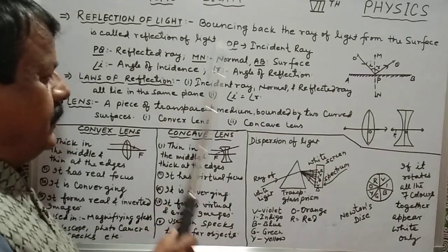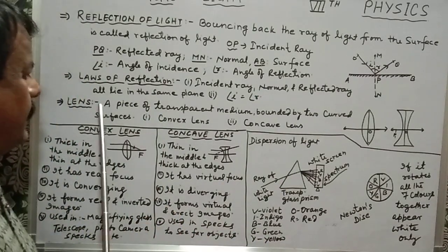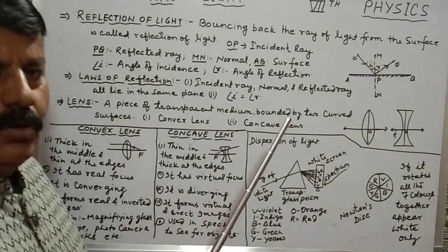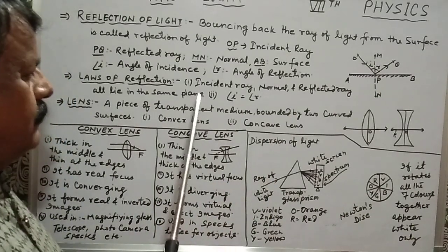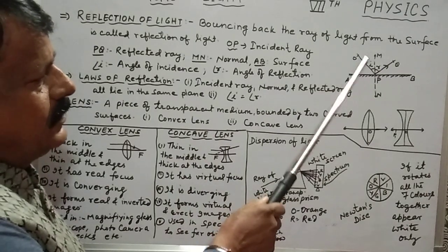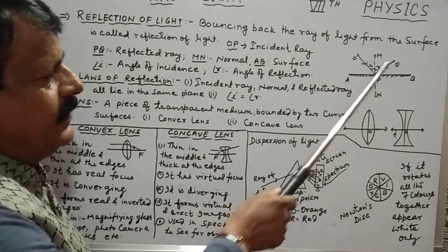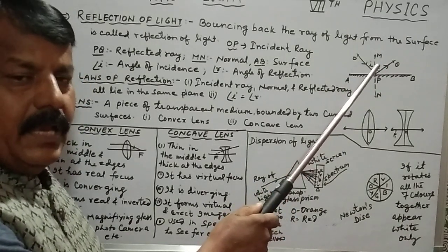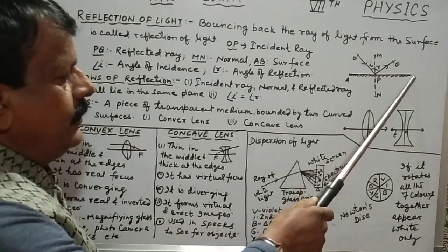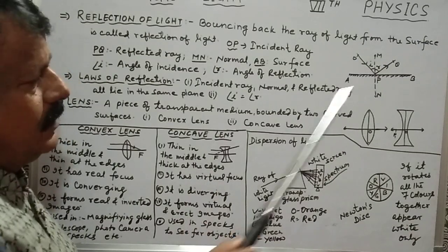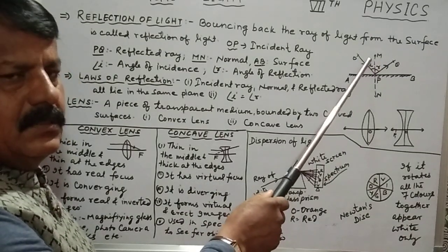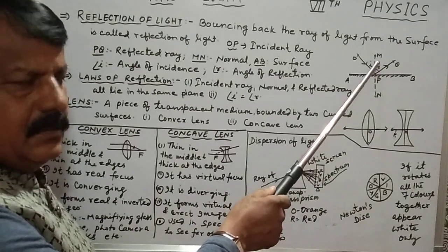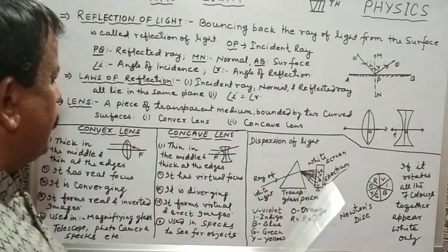Now we will describe the laws of reflection. There are two laws of reflection. Number one: the incident ray, normal, and reflected ray — all three rays — lie on the same plane. Number two: the angle of incidence is always equal to the angle of reflection. These two angles are equal.